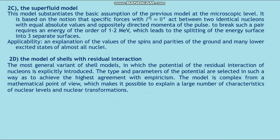Shell model variant (c): the superfluid model. This model substantiates the basic assumption of the previous model at the microscopic level. It is based on the notion that specific forces act between two identical nucleons with equal absolute values and oppositely directed momenta. To break such a pair requires an energy on the order of 1–2 MeV, which leads to the splitting of the energy spectrum into three separated surfaces. Applications include explanation of the spin and parity values of the ground and many low excited states of almost all nuclei.